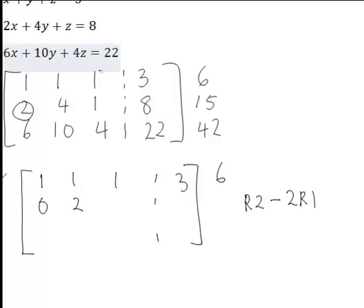8 minus 2 times 3 is 2. And the row sum of this new row is 3.